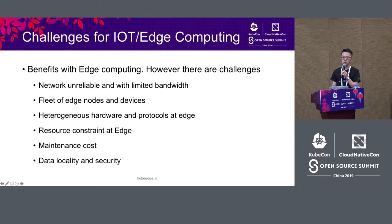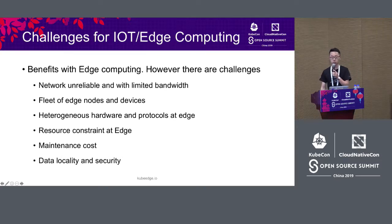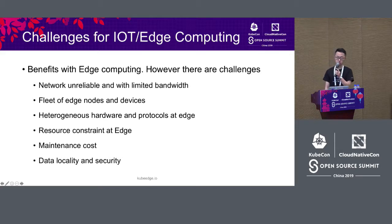There is limited bandwidth, and all the nodes and devices at the edge are large in number. In scenarios like industrial control, there is heterogeneous hardware. Also, devices on the edge are quite small, so resources are constrained. Maintenance cost is also a challenge. But your data requests can be sent to the edge and return quite quickly, so you can achieve data locality and security.